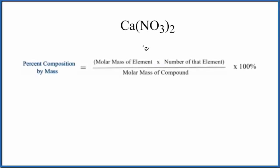To find the percent composition by mass for each element in Ca(NO3)2, calcium nitrate, we'll use this equation here.